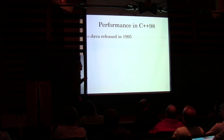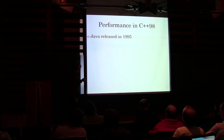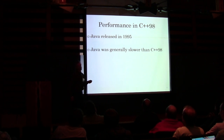C++ was released in 1995. Generally, Java was slower than C++.